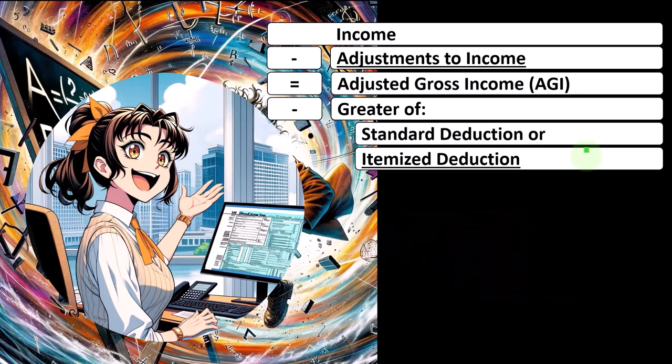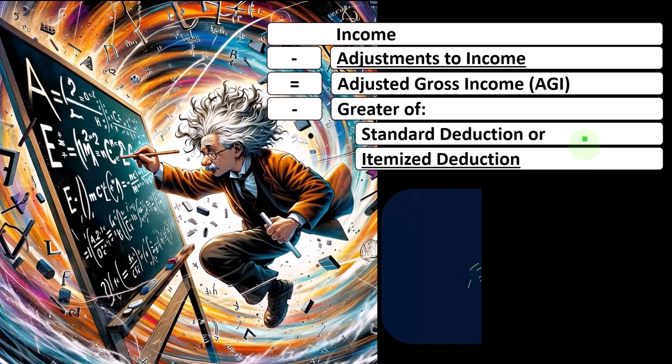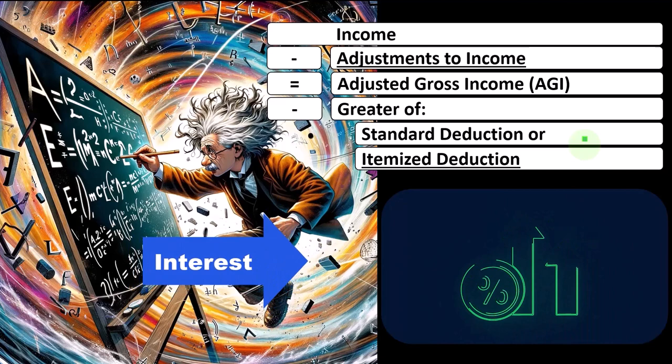What are the itemized deductions that usually push people over the threshold to itemize rather than taking the standard? Usually things related to a home purchase, such as the interest, mortgage interest and property taxes.